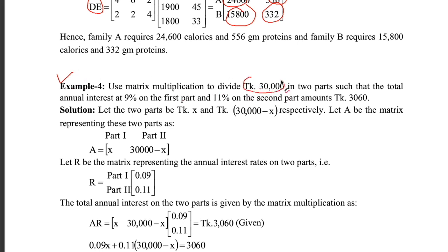Use matrix multiplication — we need to divide 30,000 into two parts so that the first part gives nine percent interest and the second part gives eleven percent interest, and the total interest required is a given amount. How much money do you need to invest in each part? Let's say you invest x taka in part one and 30,000 minus x taka in part two.